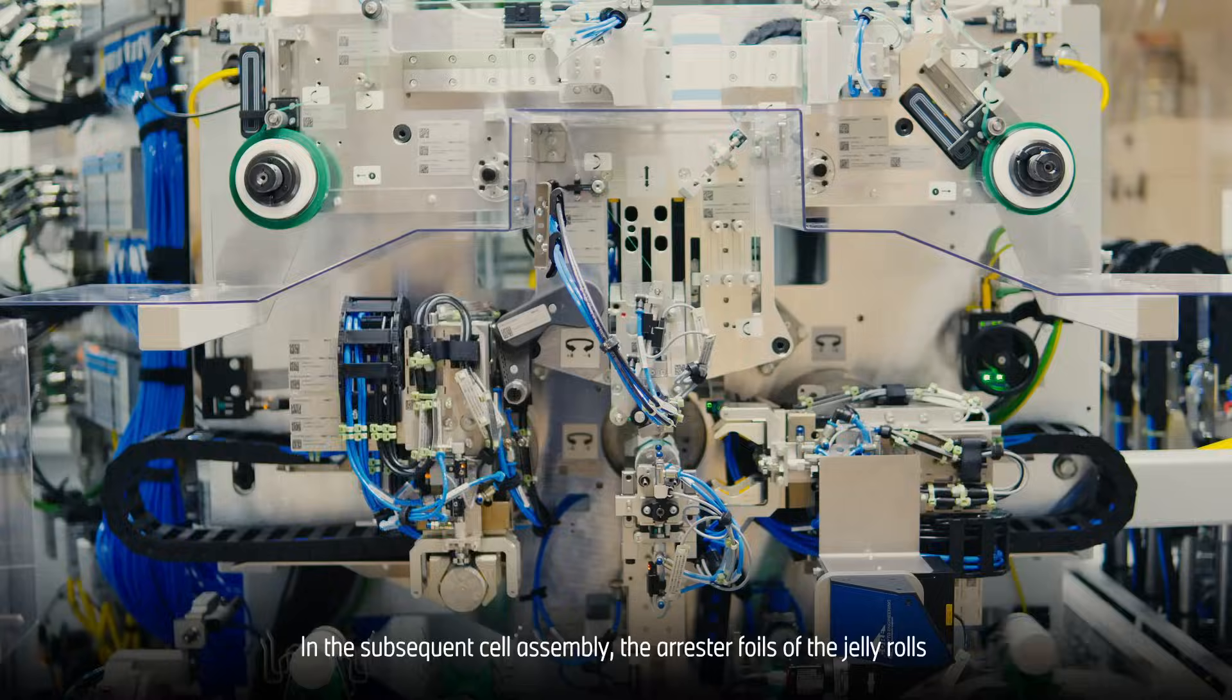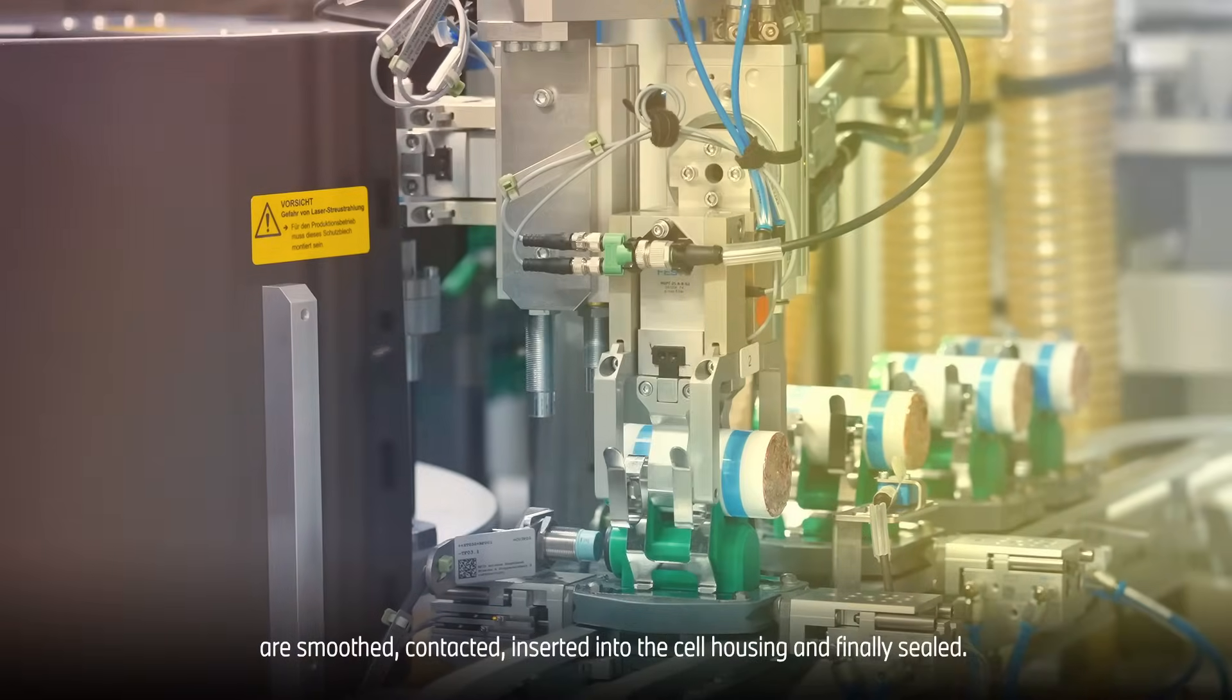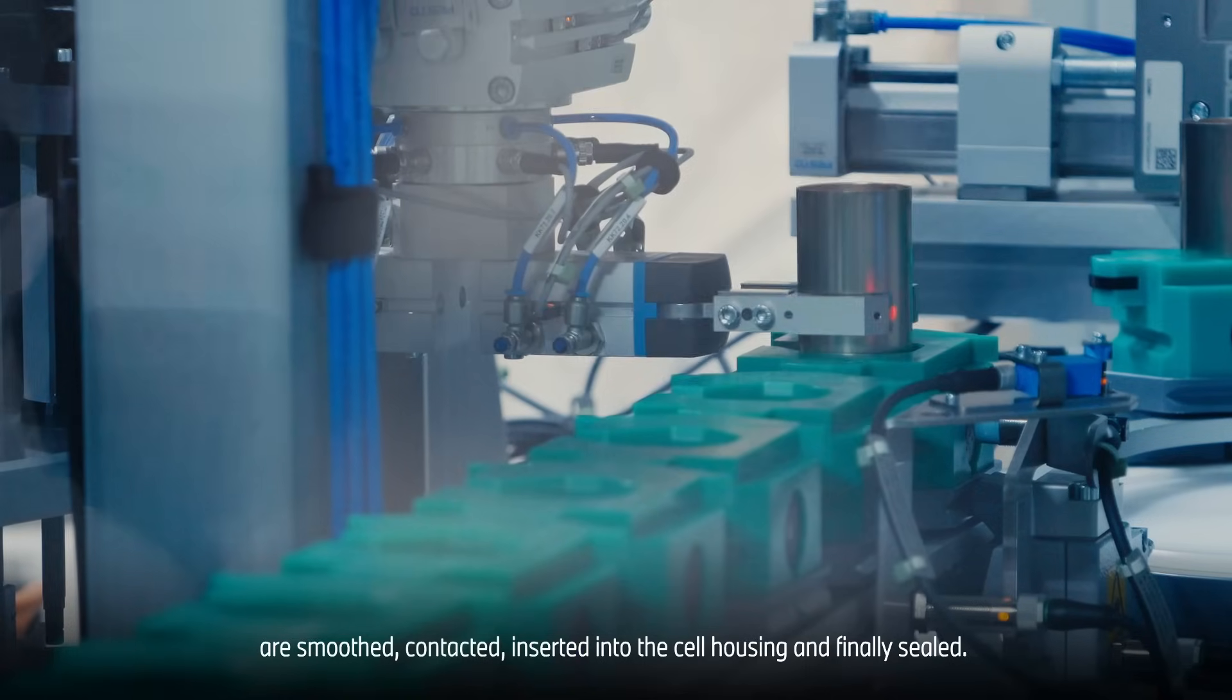In the subsequent cell assembly, the arrestor foils of the jelly rolls are smoothed, contacted, inserted into the cell housing, and finally sealed.